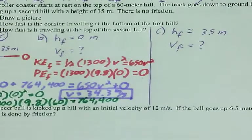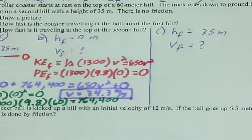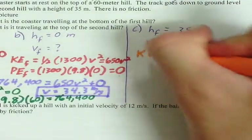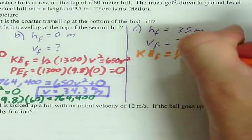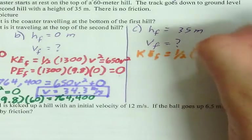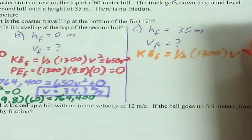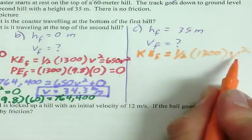34.3 meters per second. So now we're ready to do C. And C is going to work out the exact same way. But we need to find the new values for KE_f and PE_f.